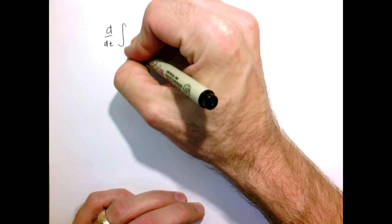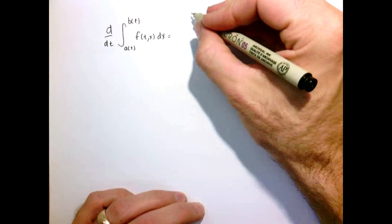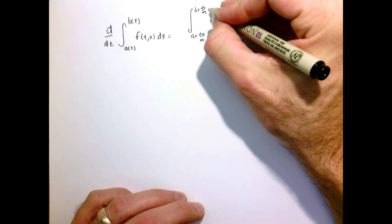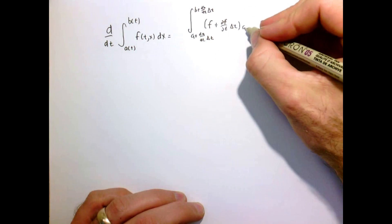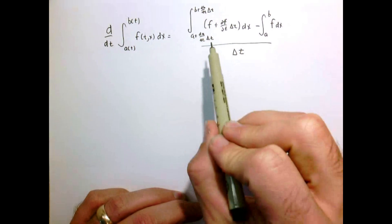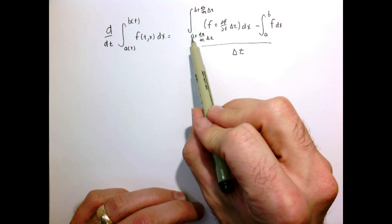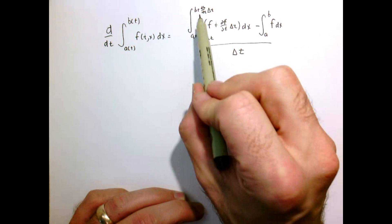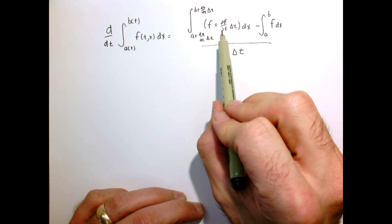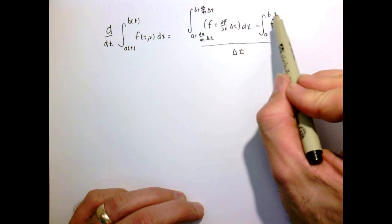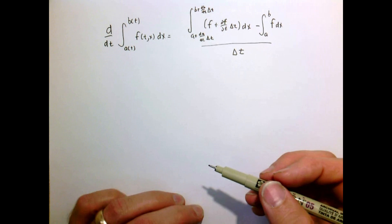So let's work this out a little more formally. Here I have the value of the integral a short time in the future, so my limit of integration has shifted from a to a plus da/dt times my short distance delta t — likewise for the upper limit of integration and likewise for my function itself. So I take the difference of the integral in the future minus the current value, divided by delta t, and let's expand all these terms out.